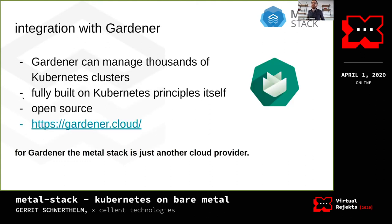Now let's bring Kubernetes into the game. To deploy a lot of Kubernetes clusters, we found a very promising open source project called Gardener. Gardener manages Kubernetes clusters at scale — it's capable of running thousands of clusters. The team from SAP, who created Gardener, are running more than 2,000 clusters in production with it. We implemented all the necessary components to make MetaStack work nicely with Gardener, and from Gardener's perspective, we are just another cloud provider.